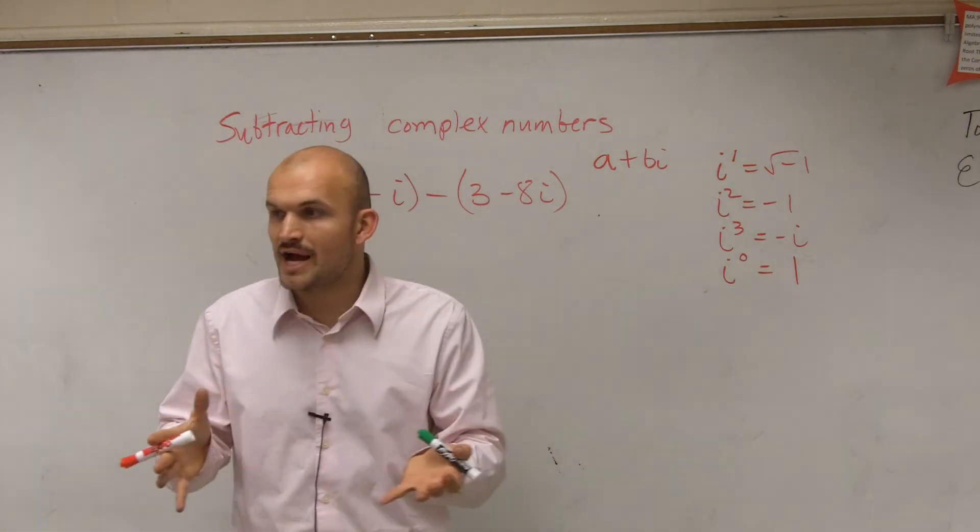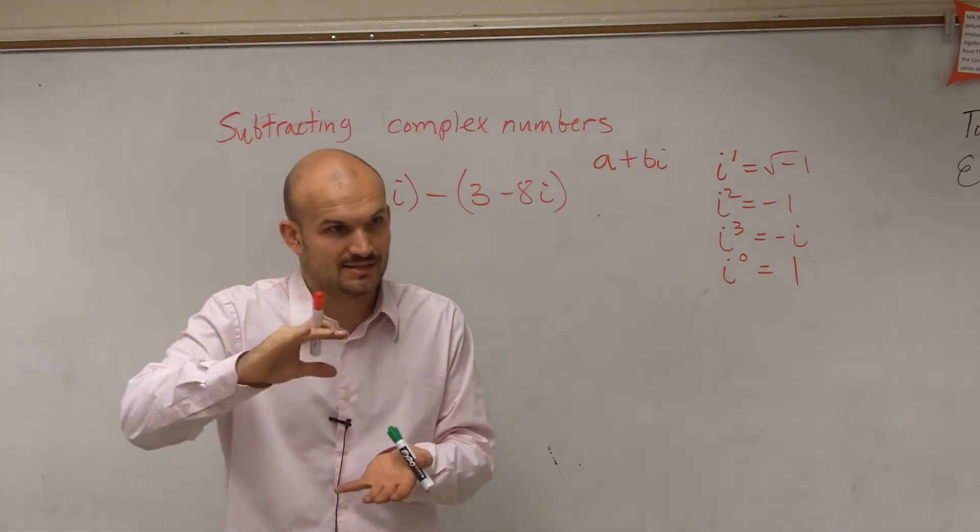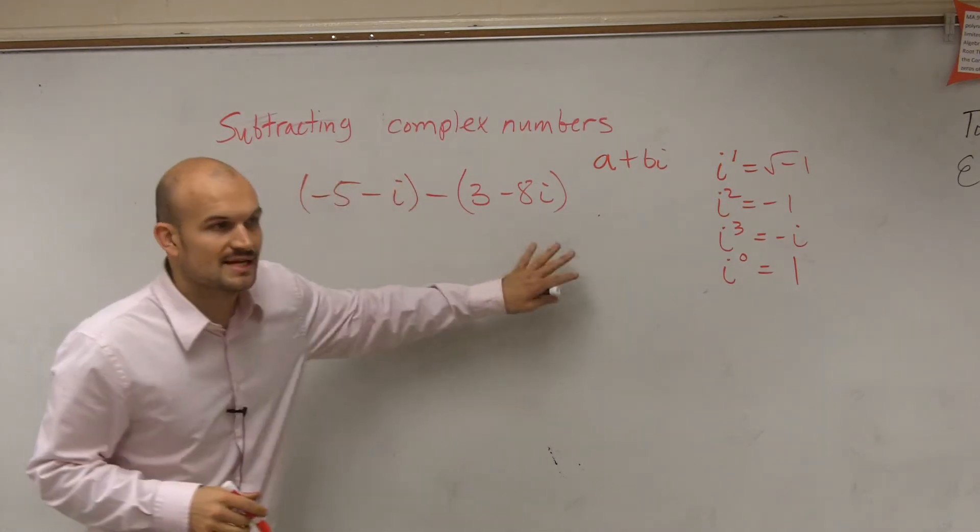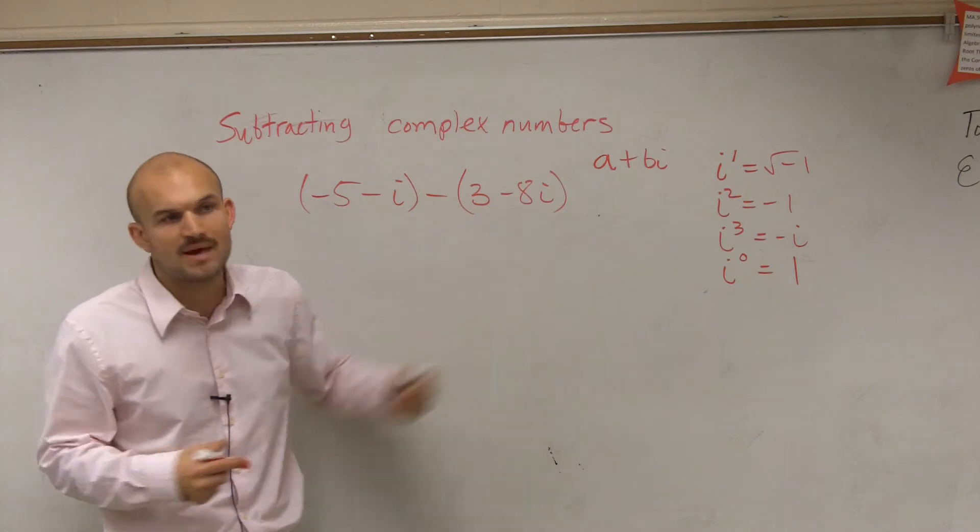If you guys remember when you first learn to add or subtract we learned the vertical method, right? Just take one number, put them on the top and then add or subtract. When you first learn how to add and subtract polynomials that's what we did. Since we're treating our i just like it was a variable we can do that method as well.